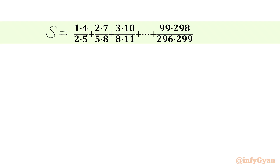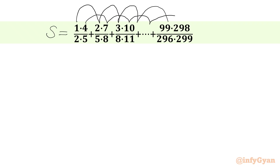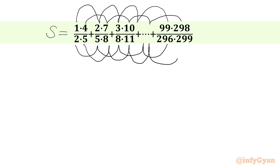Now we can say there are four series available in this problem. The first series is 1, 2, 3, 4 up to 99. The second series is 4, 7, 10, 13 up to 298. The third series is 2, 5, 8, 11 up to 296. The fourth series is 5, 8, 11, 14 up to 299.